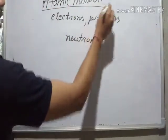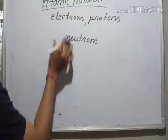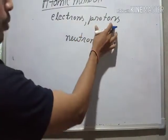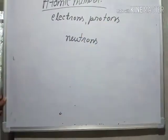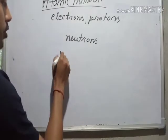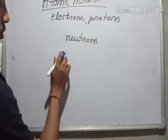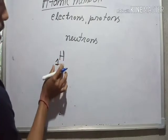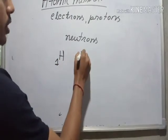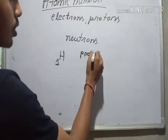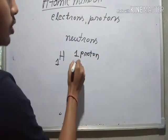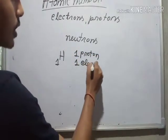Now, atomic number of any element gives the number of electrons or protons present in the atom. Suppose you consider hydrogen element which has the atomic number one. So if hydrogen element has atomic number one, that means it has one proton and one electron.